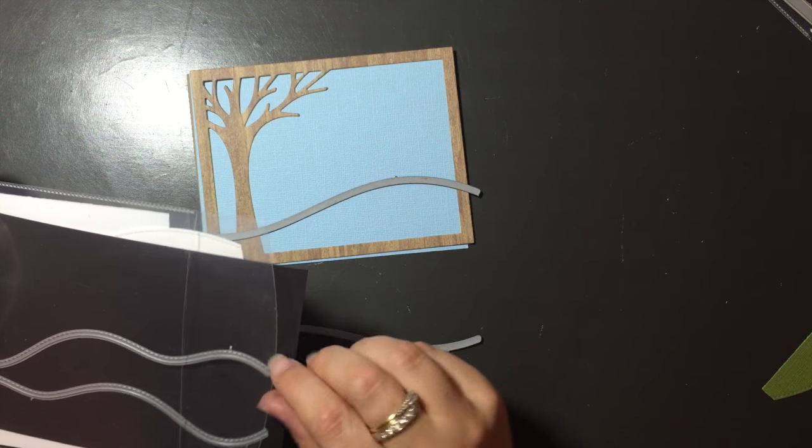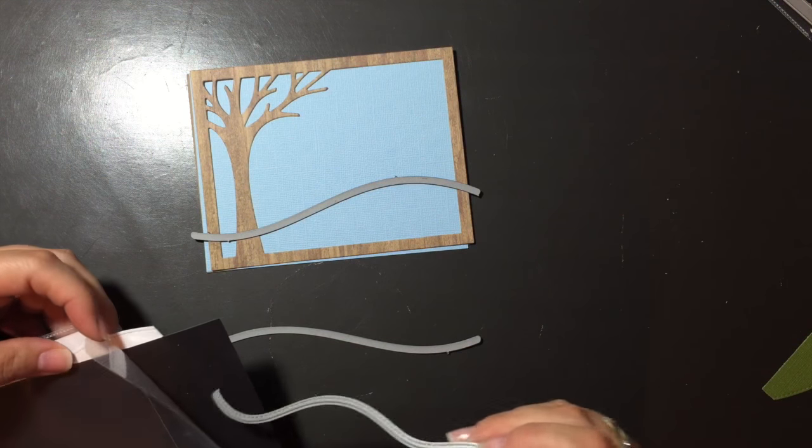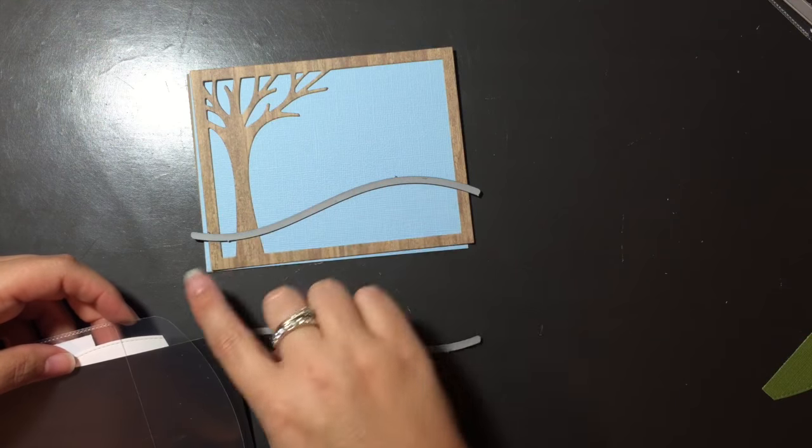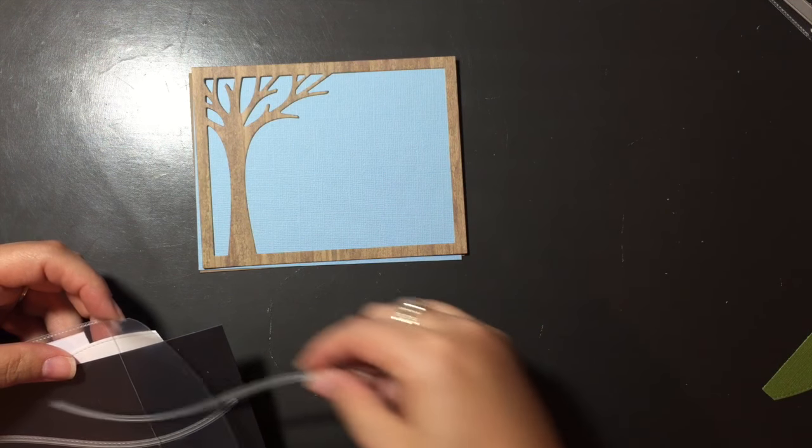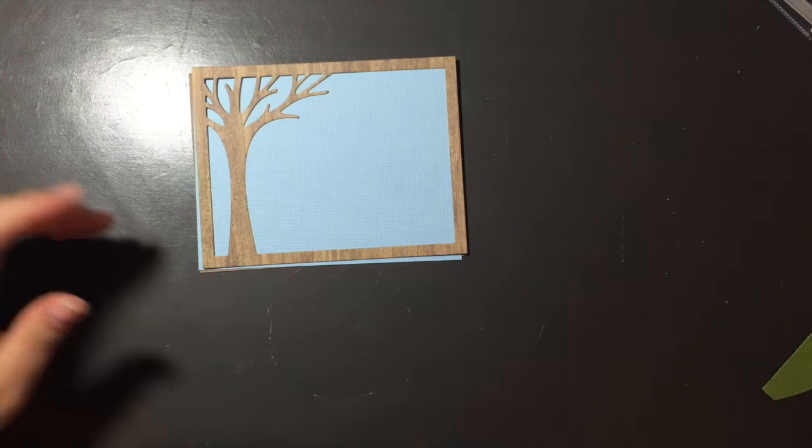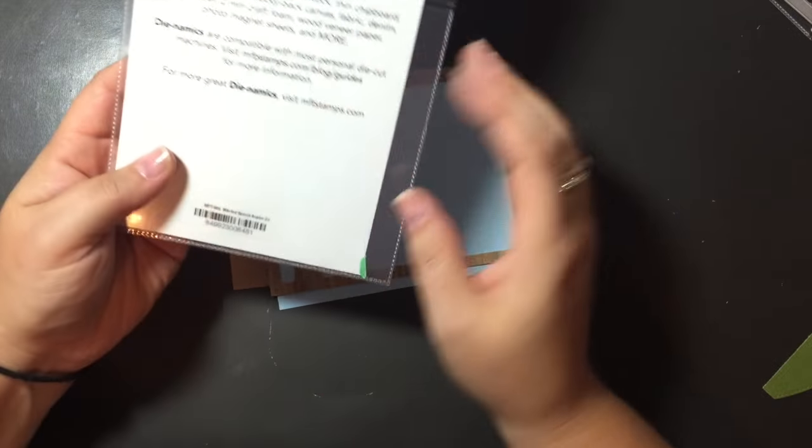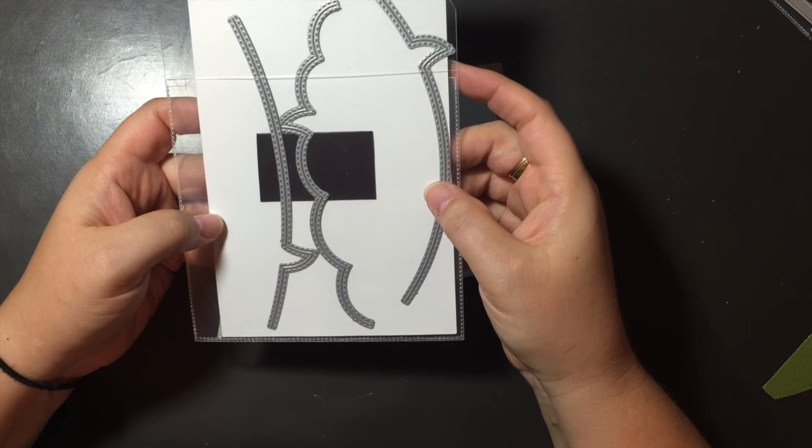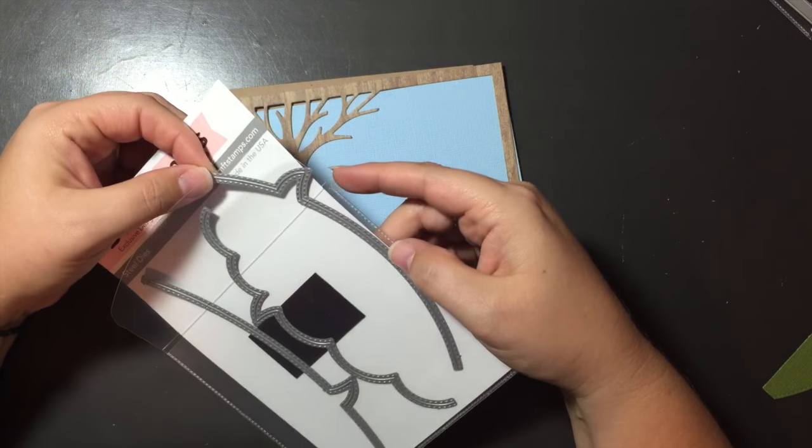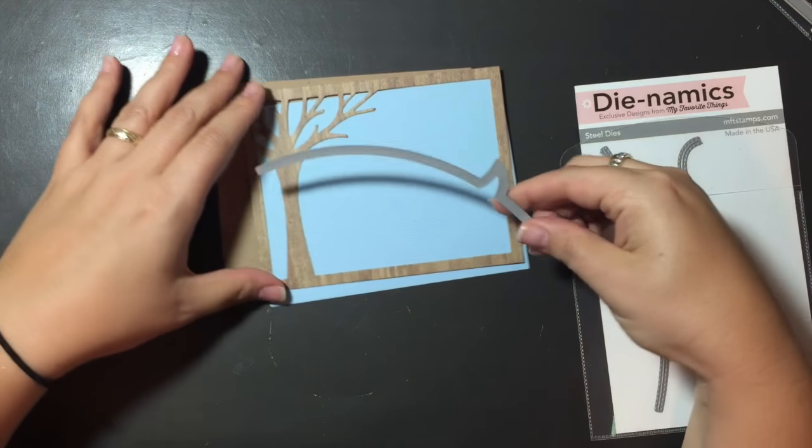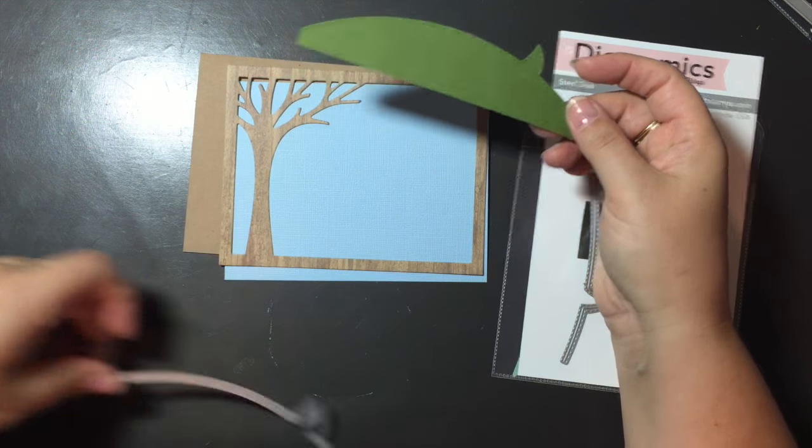Or then these ones are like back and forth wiggly. And I kind of wanted just the one hill. And I don't have a landscape die for that. So, I am improvising using these stitched speech bubbles from MFT Dies. So this one here has a nice swoop to it.